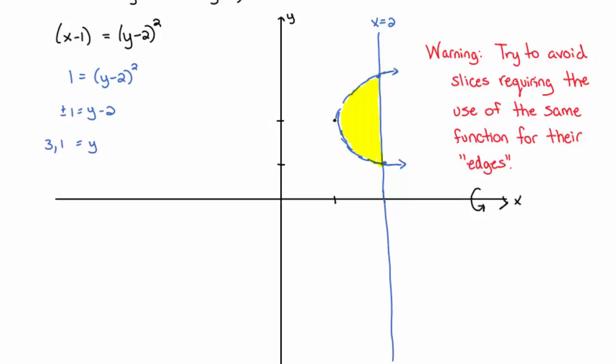So, a vertical slice because the top and bottom are defined by the same function. And maybe I should write this down. So, I think this warning kind of sums it up. Just try to avoid slicing so that it uses the same function for the edges. So, the top and bottom here border is defined by the same function. So, we'd like to avoid that. So, what I'm going to do is erase that slice. And in its place, I'm going to slice horizontally. And so, the representative slice looks like this. I'll actually even shade that in so that we can really see the slice going on.